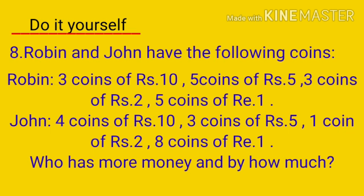Now question number 8 — you will do it yourself. Robin and John have the following coins. Robin: 3 coins of rupees 10, 5 coins of rupees 5, 3 coins of rupees 2, and 5 coins of rupees 1. John: 4 coins of rupees 10, 3 coins of rupees 5, 1 coin of rupees 2, and 8 coins of rupees 1. You have to find out who has more money and by how much. This you will find out yourself.